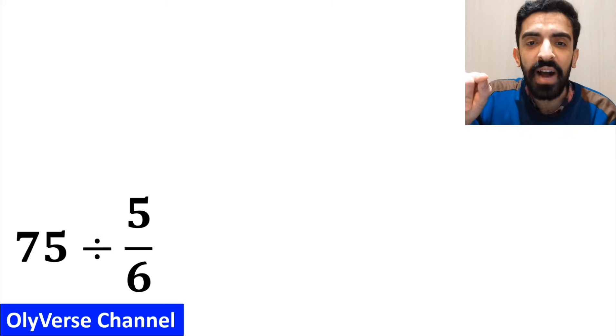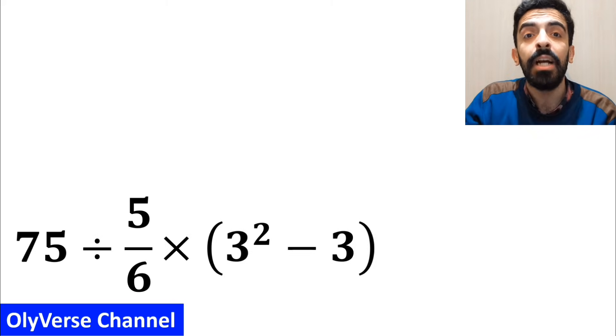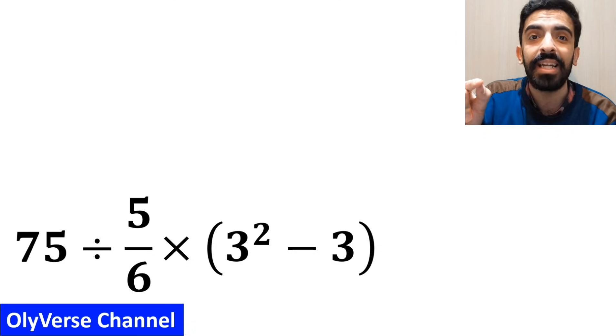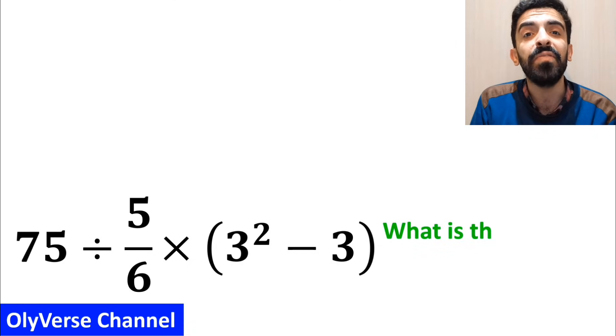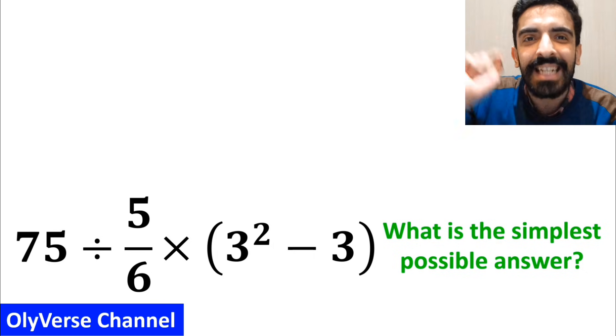If we have the expression 75 divided by 5 over 6 multiplied by open parenthesis 3 to the power of 2 minus 3 close parenthesis, then what is the simplest possible answer for this expression?